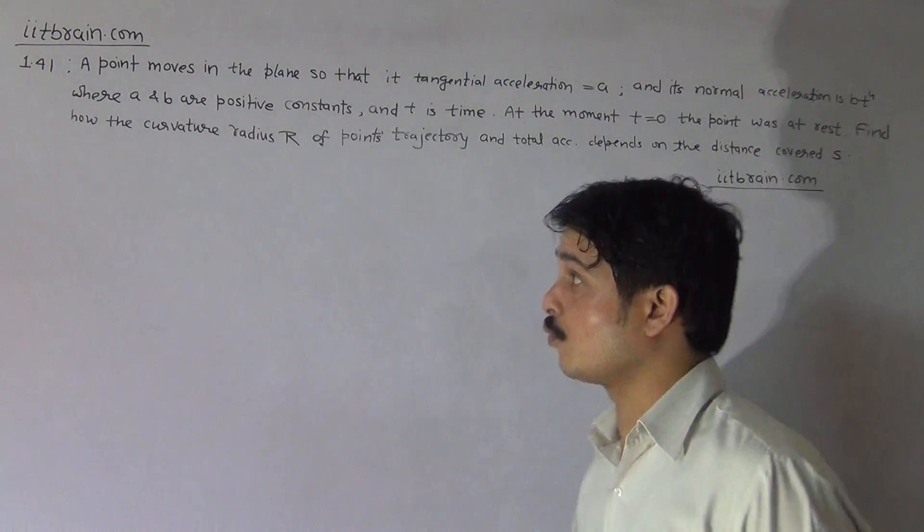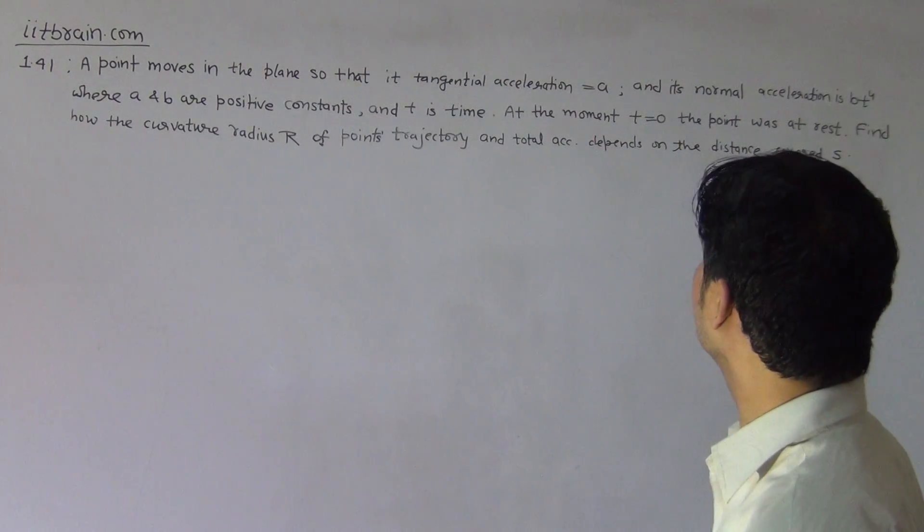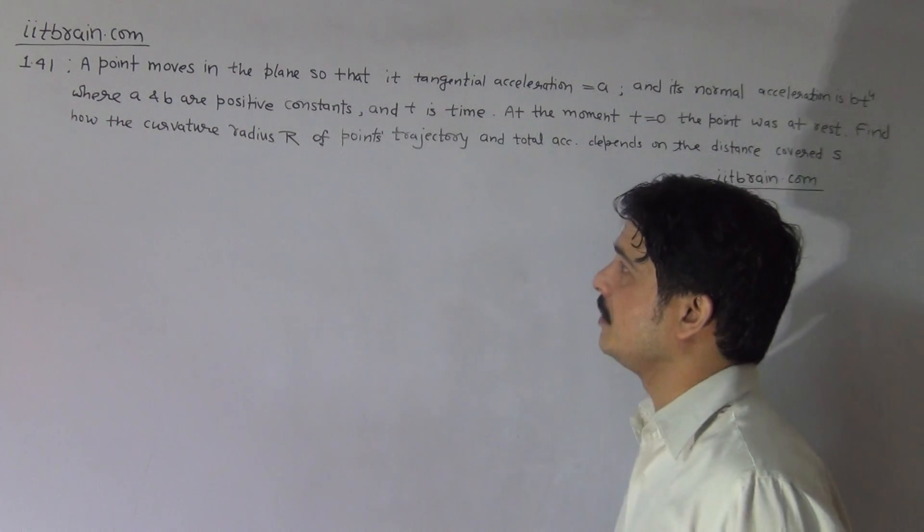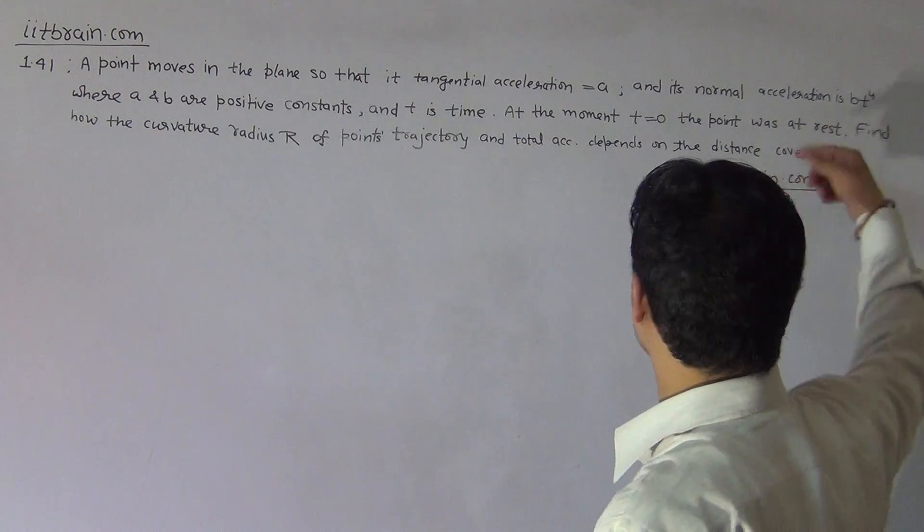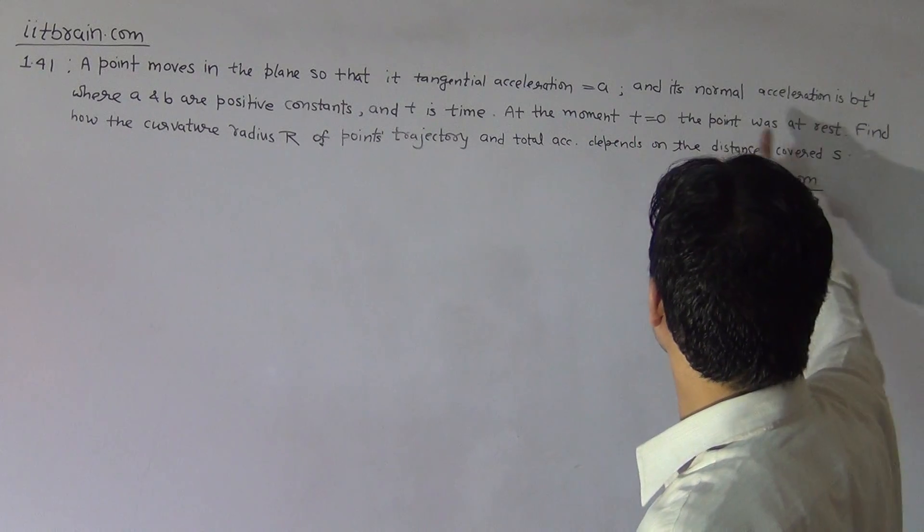Hello students, this is problem 1.41. A point moves in the plane so that its tangential acceleration is A and its normal acceleration is Bt to the power 4, where A and B are positive constants and t is time. At moment t equals 0, the point was at rest.